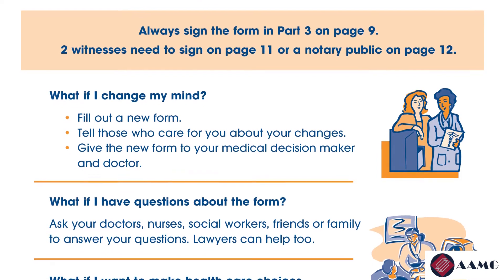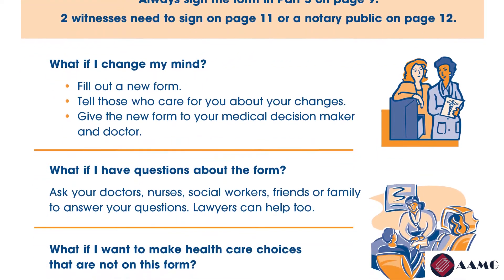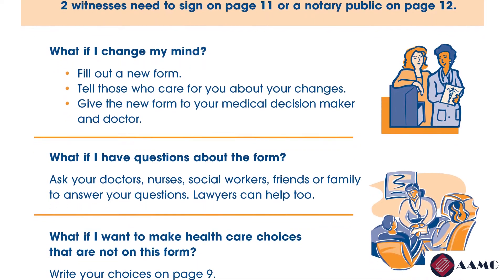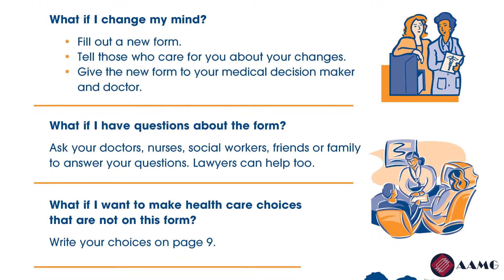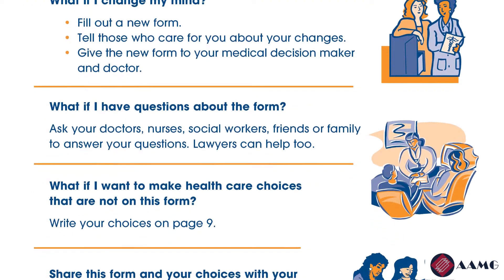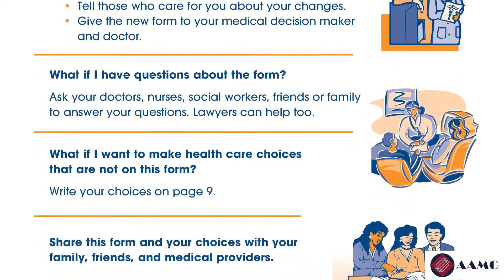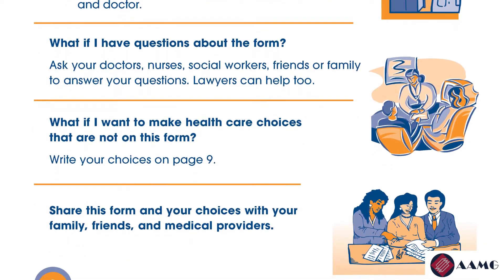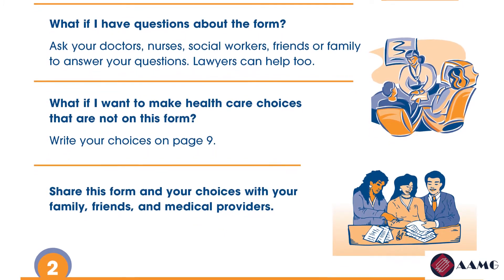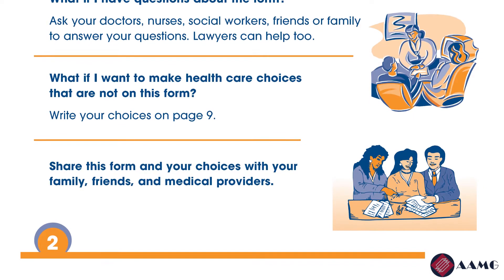On the second half of this page it goes over some frequently asked questions. If you change your mind about anything, please fill out a new form, tell those who care for you about your changes, and remember to give the new form to your medical decision maker and doctor. If you have any questions about the form, you may ask your doctor, nurses, social workers, friends, or family for advice. A lawyer may also be helpful. If you want to make healthcare choices not listed in the form, you can write them on the blank lines available on page nine. Most importantly, share this form and your choices with your family, friends, and team of medical providers.